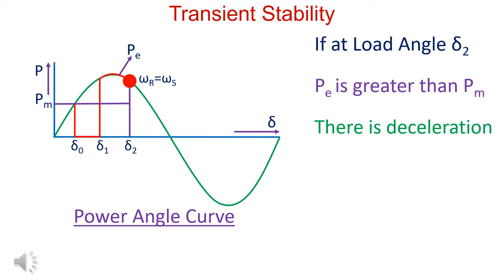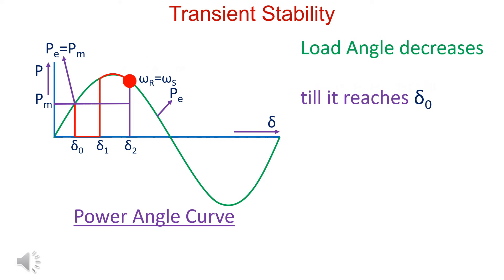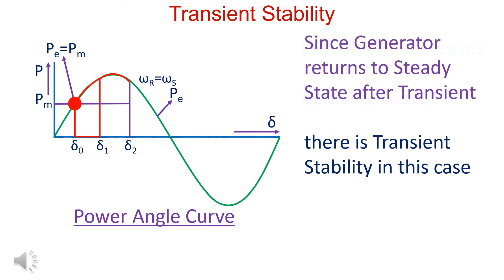At load angle delta_2, omega_r is equal to omega_s. If at load angle delta_2, Pe is greater than Pm, there is deceleration and the load angle decreases until it reaches delta_0. Since the generator returns to steady state after the transient, we say there is transient stability.